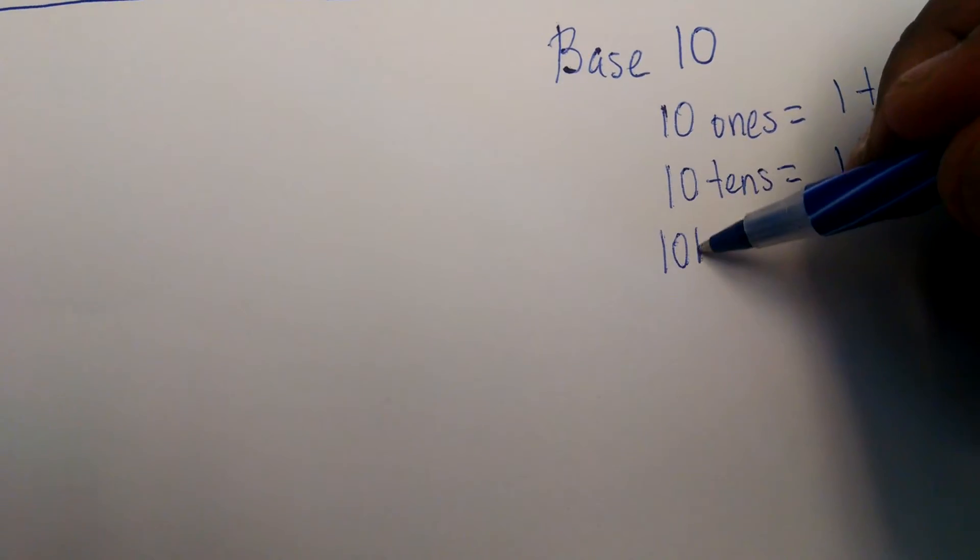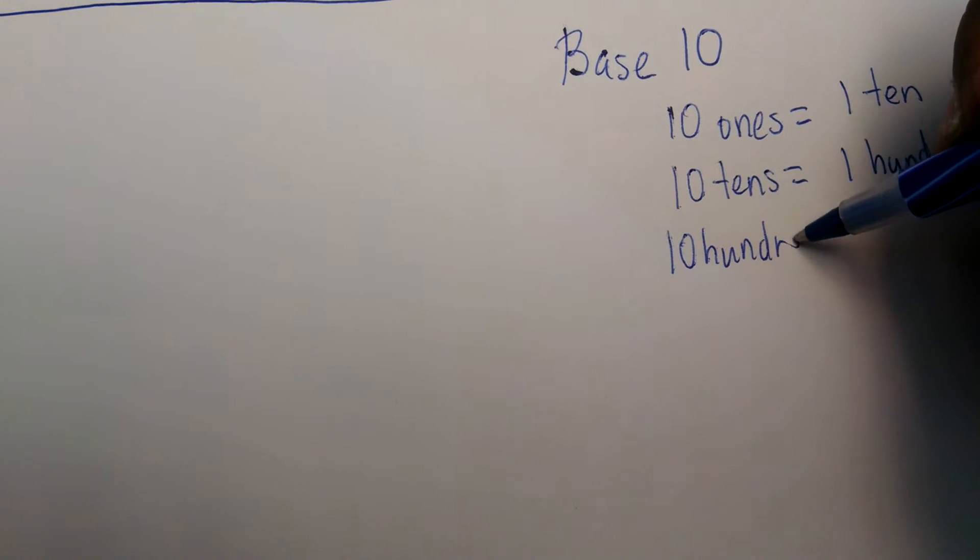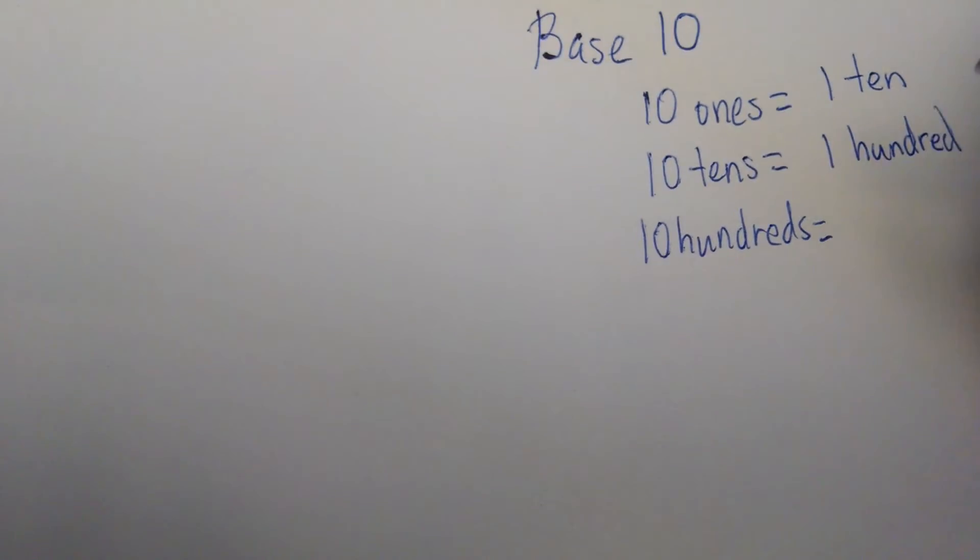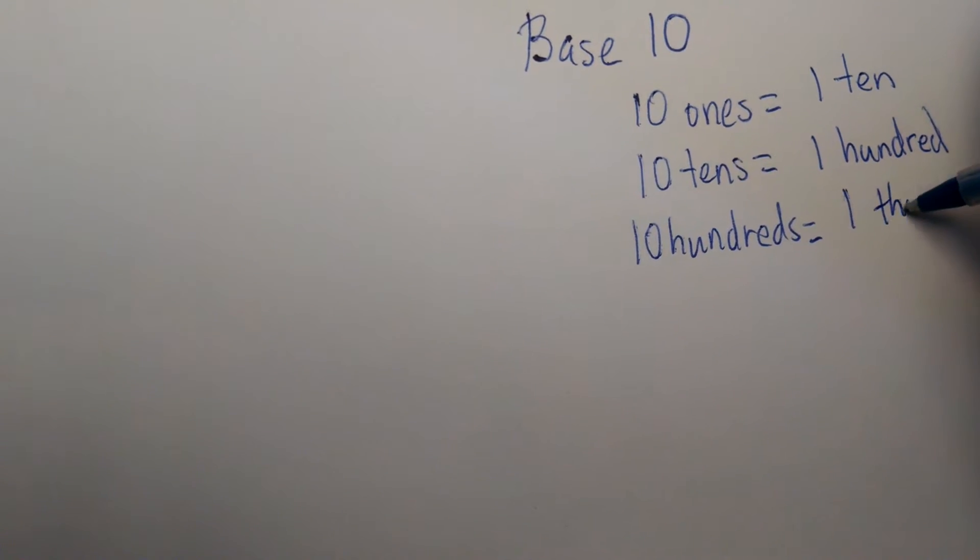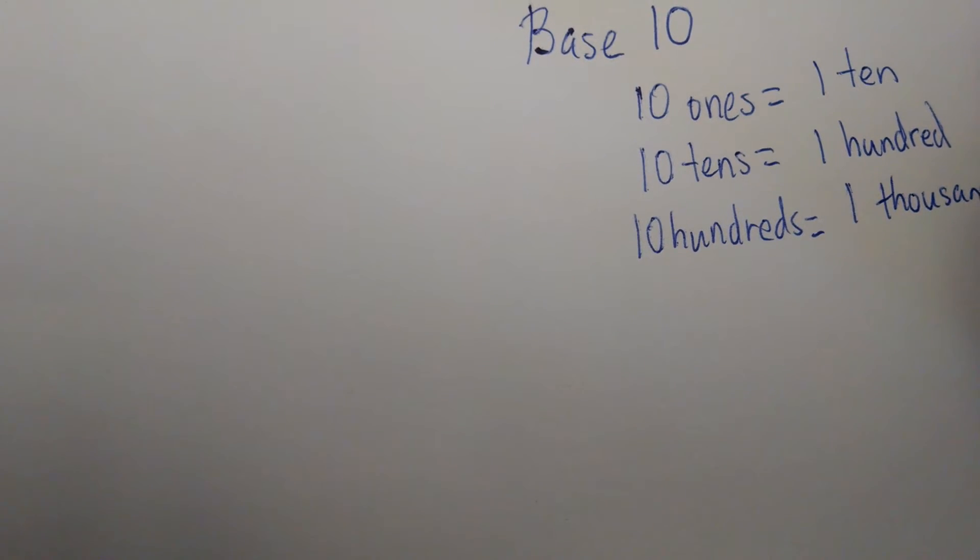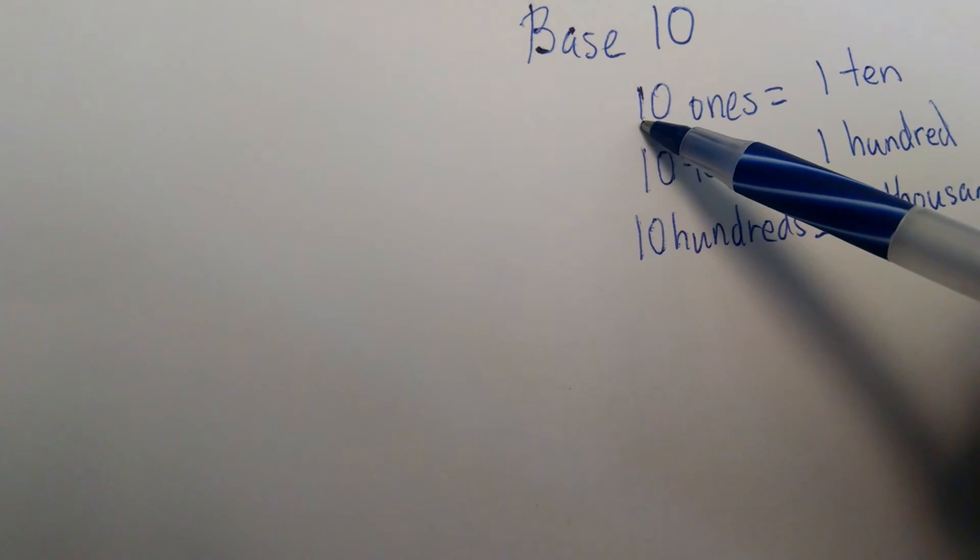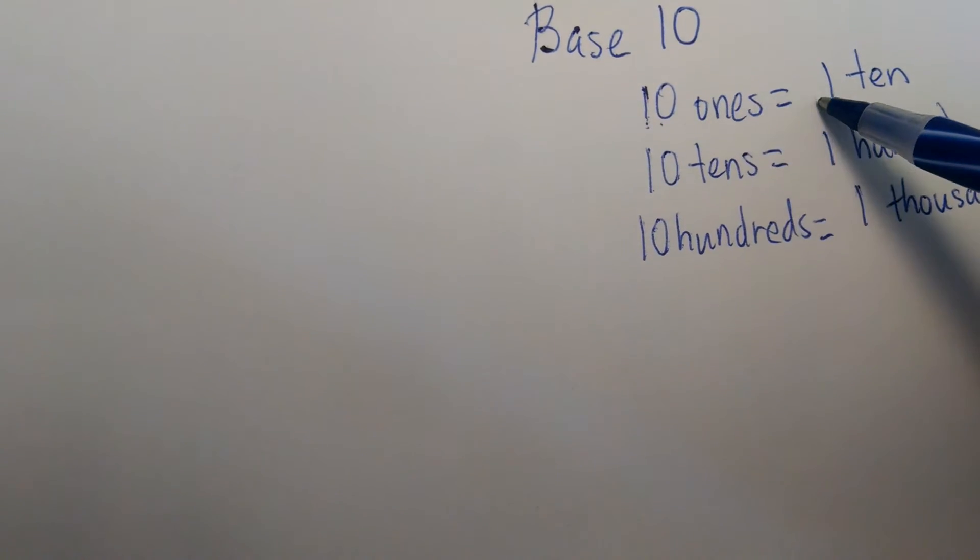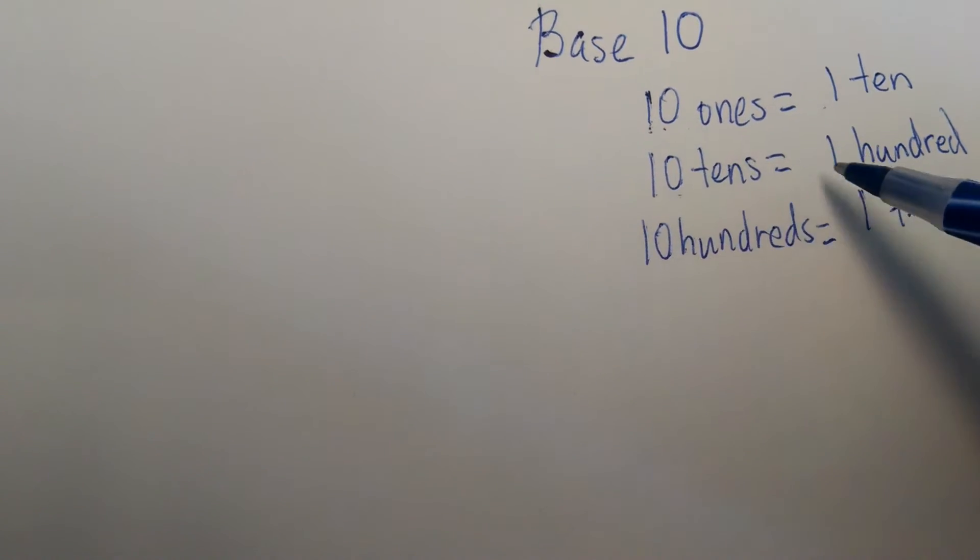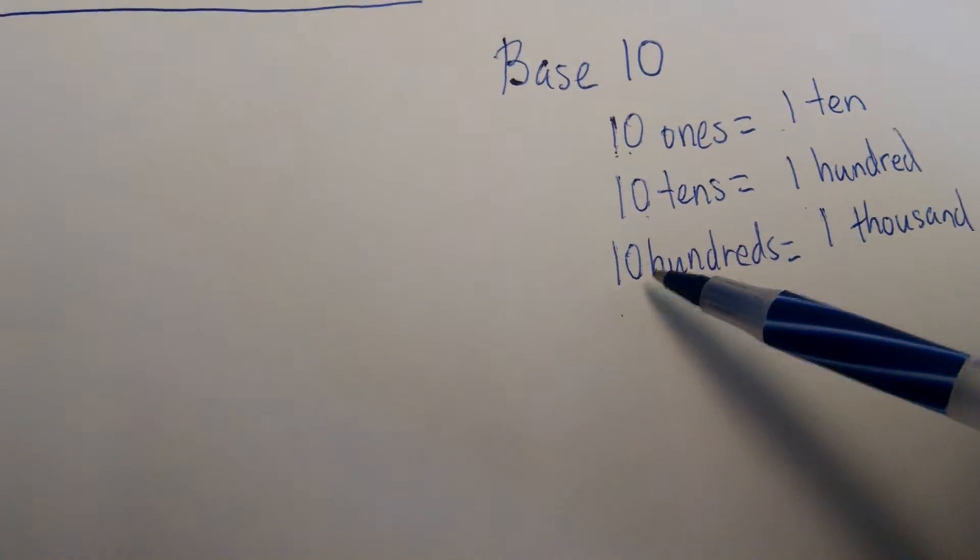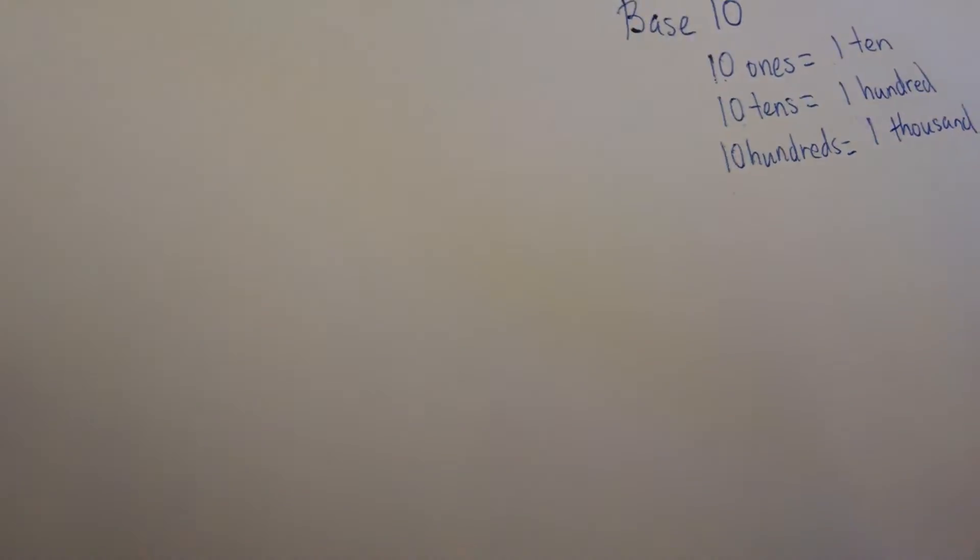And if I had 10 hundreds, that's equivalent to 1 thousand. So essentially this unit, this digit here, jumps. 10 ones now becomes 1 ten, 10 tens becomes 1 hundred, 10 hundreds becomes 1 thousand.